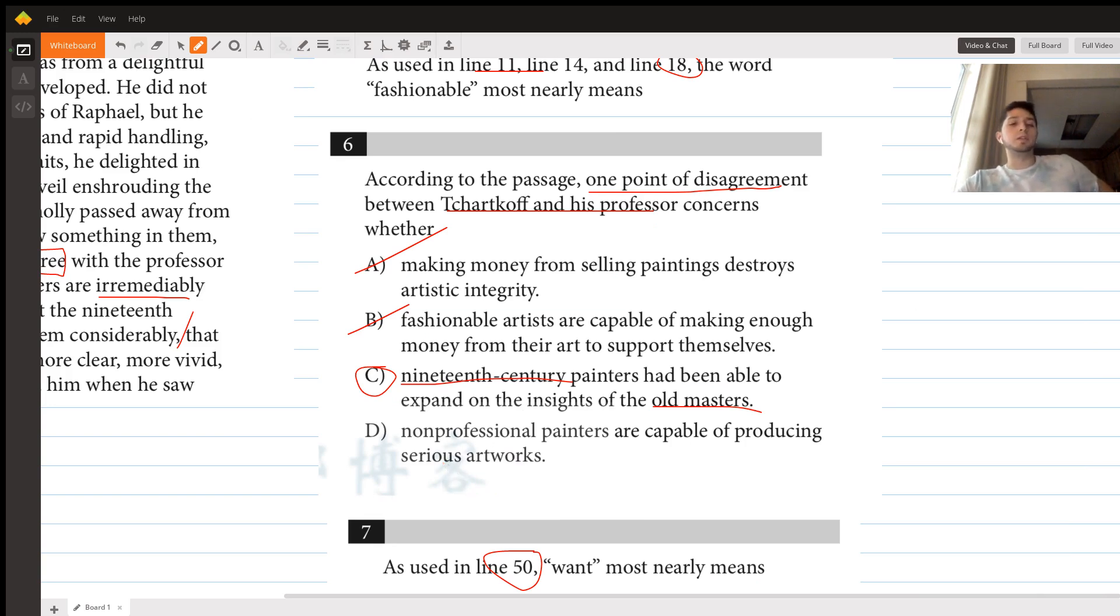D says non-professional painters are capable of producing serious artworks. This is another answer choice that we don't really have evidence for. Nowhere in the passage is talked about non-professional painters and whether or not they're able to produce serious artworks, and there's no specific text we found. So we get rid of that, and that leads us to C, which we choose as our correct answer.